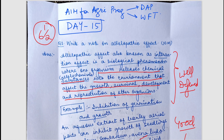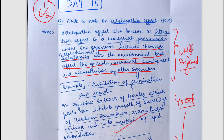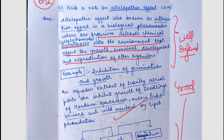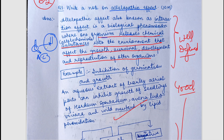Let's start the answer copy of Day 15. The first question asked was: write a note on allelopathic effect. Allelopathic effect is a biological phenomenon where one organism releases chemical substances — also known as allelochemicals — into the environment that affect the growth, survival, development, and reproduction of other organisms. For example, one tree releases allelochemicals that can have an effect on another tree.